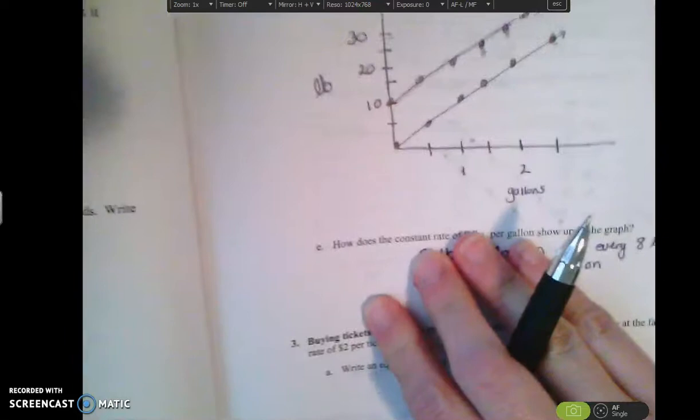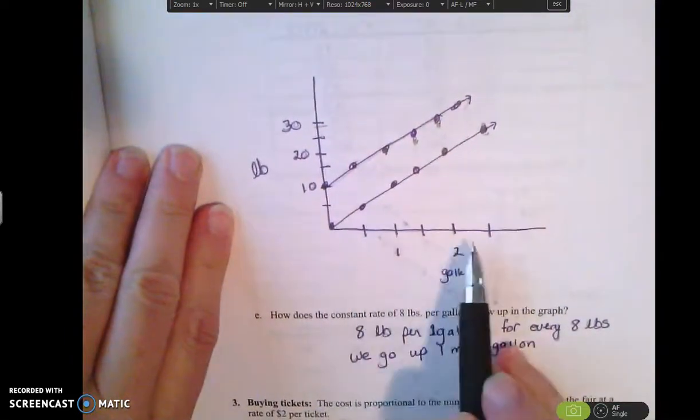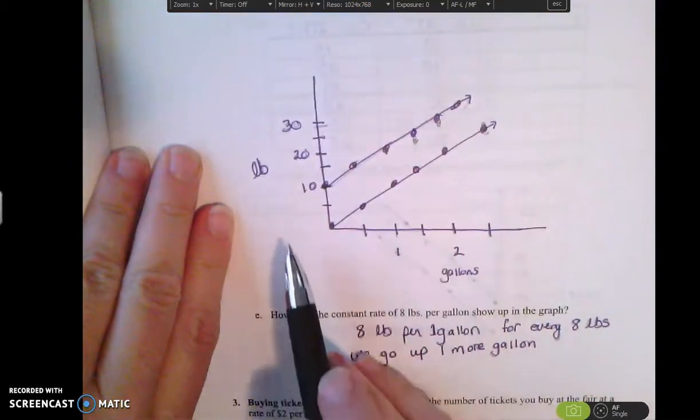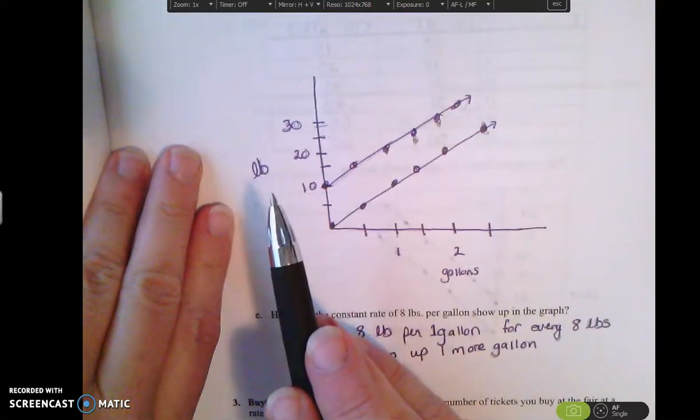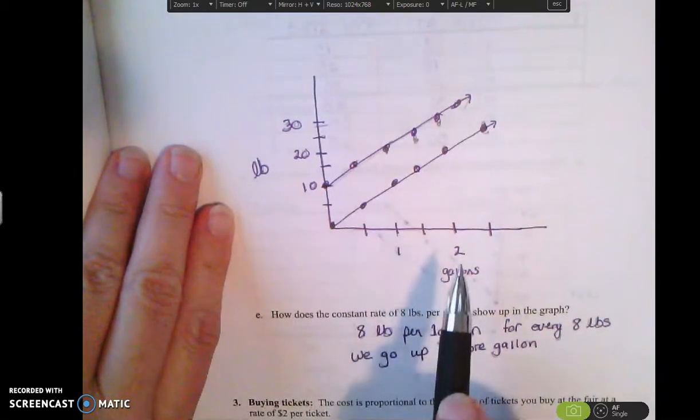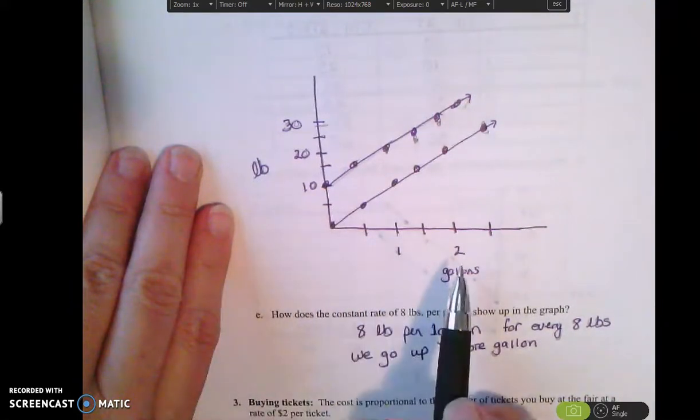So the next example says plot these points on a graph. So what we have here is we drew a graph and these are our gallons across the bottom and these are our pounds. So the pounds are what we call the dependent variable because it depends on how many gallons I put in the bucket as to what the pounds are going to be. So that's my dependent variable.